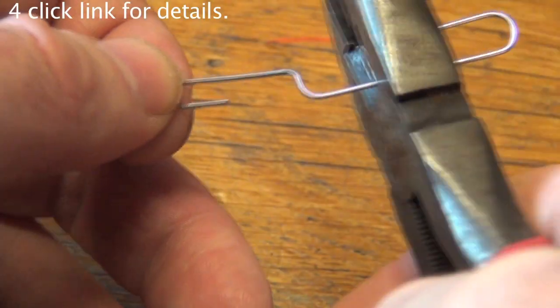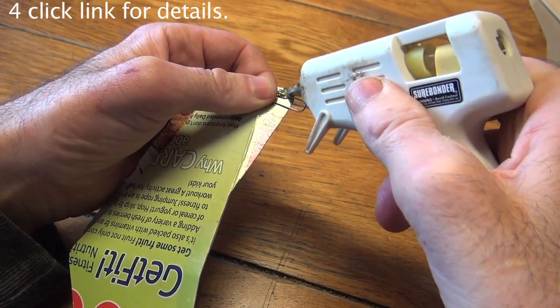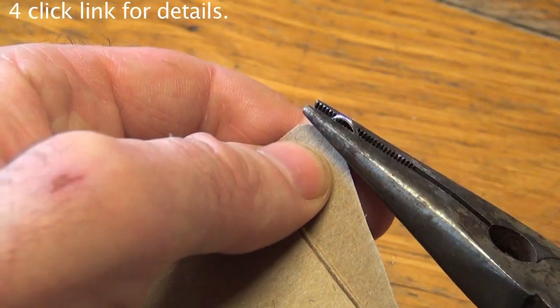I'm experimenting with gluing part of a paper clip to the jig to help locate the foam more quickly.